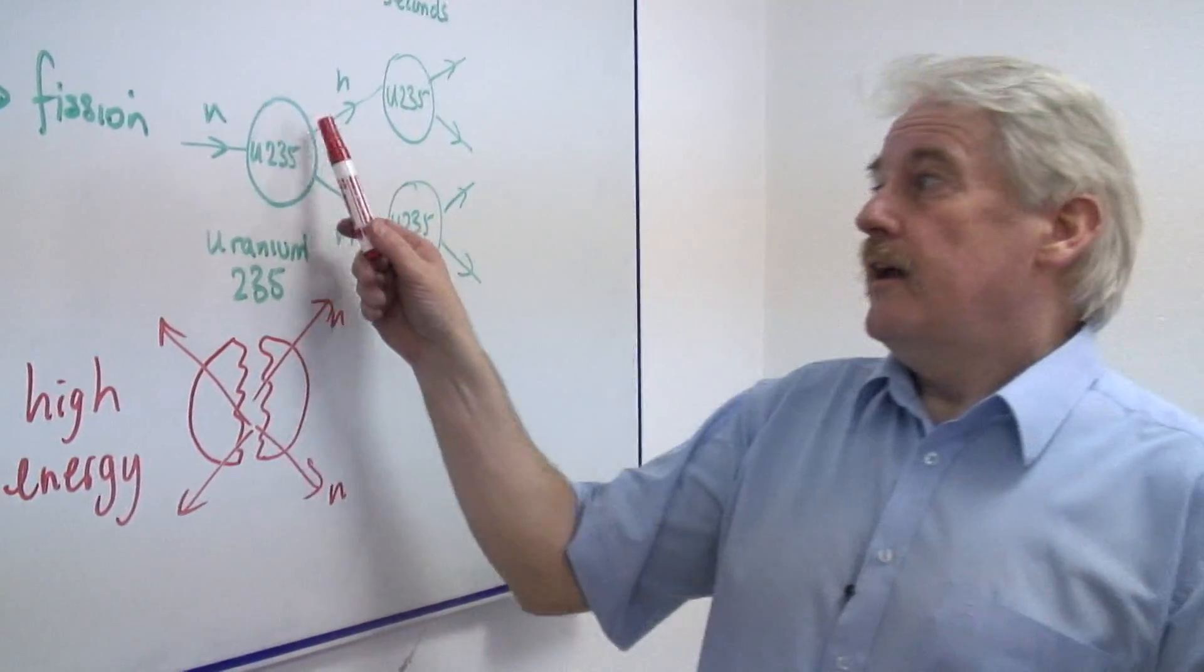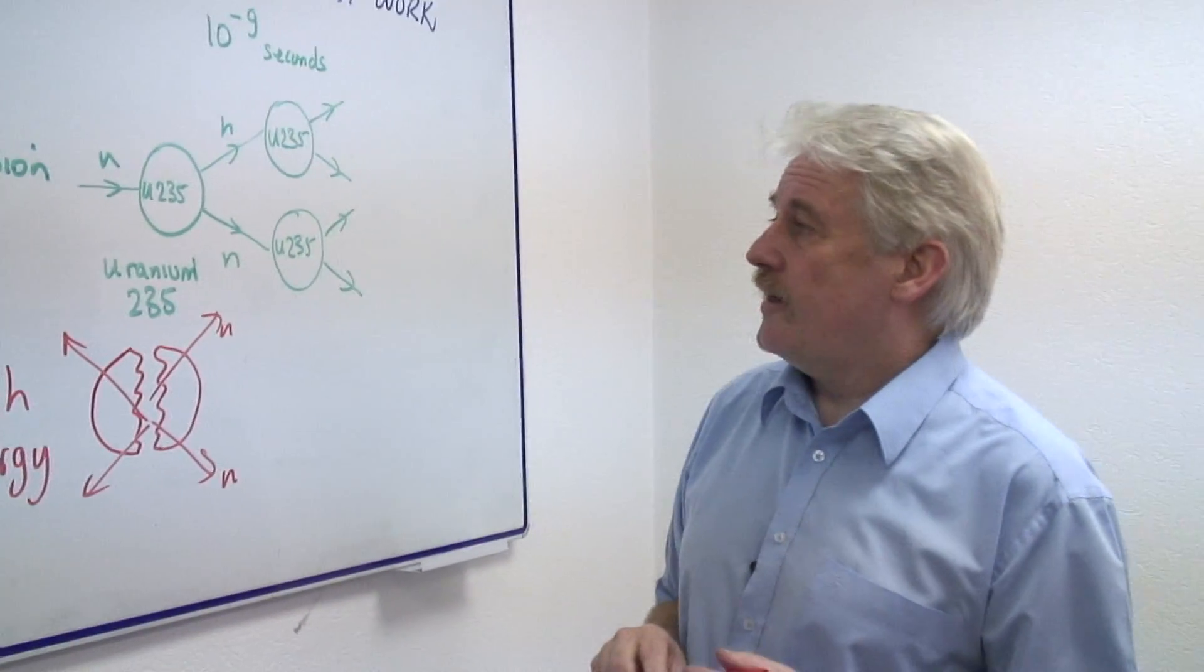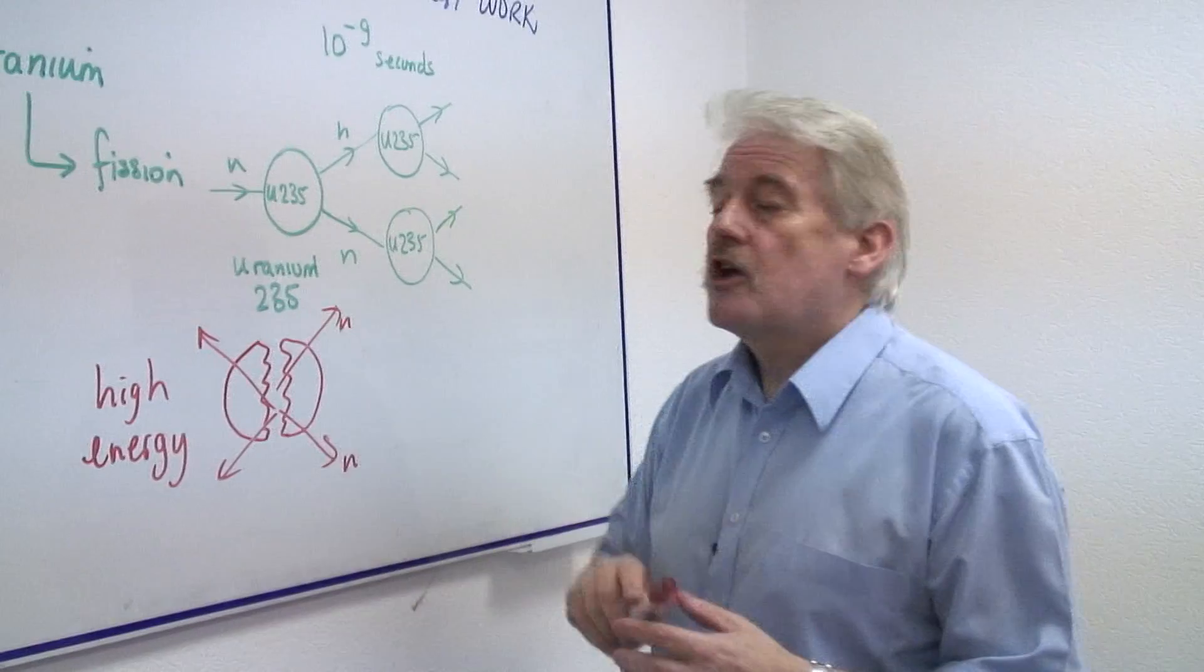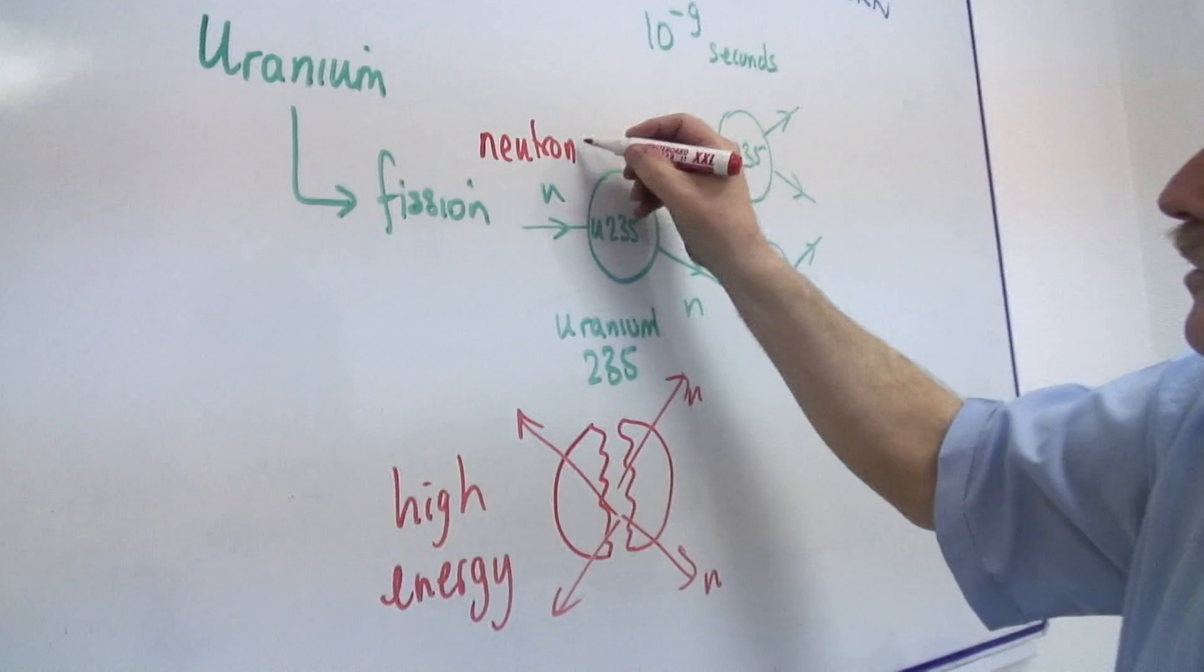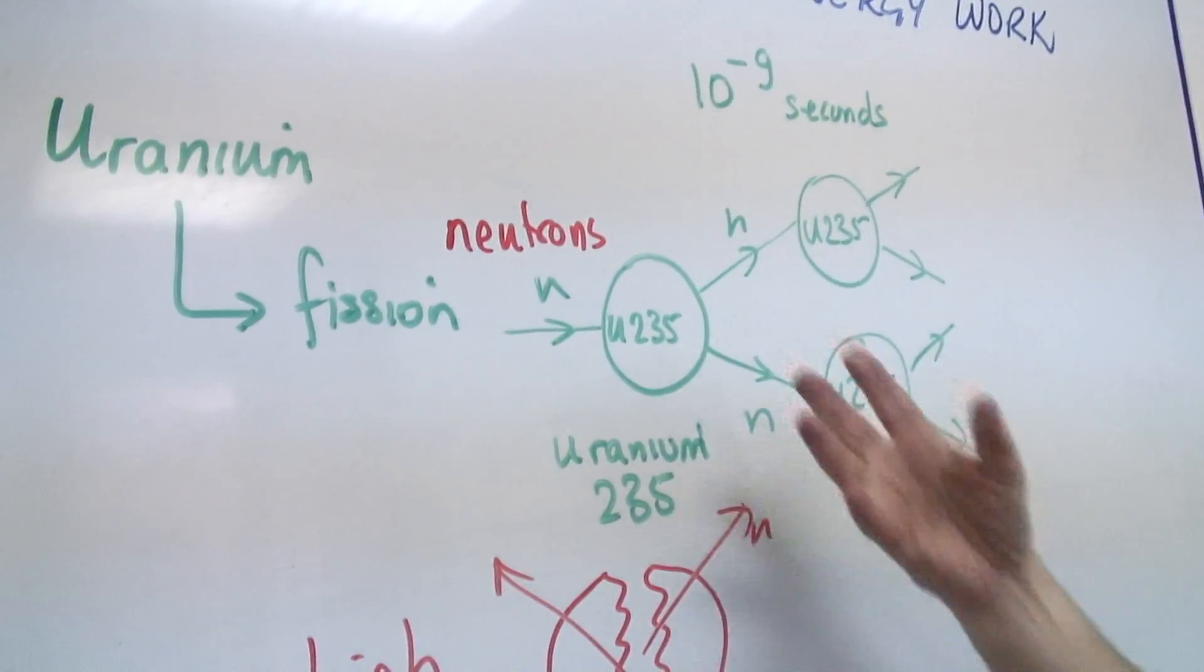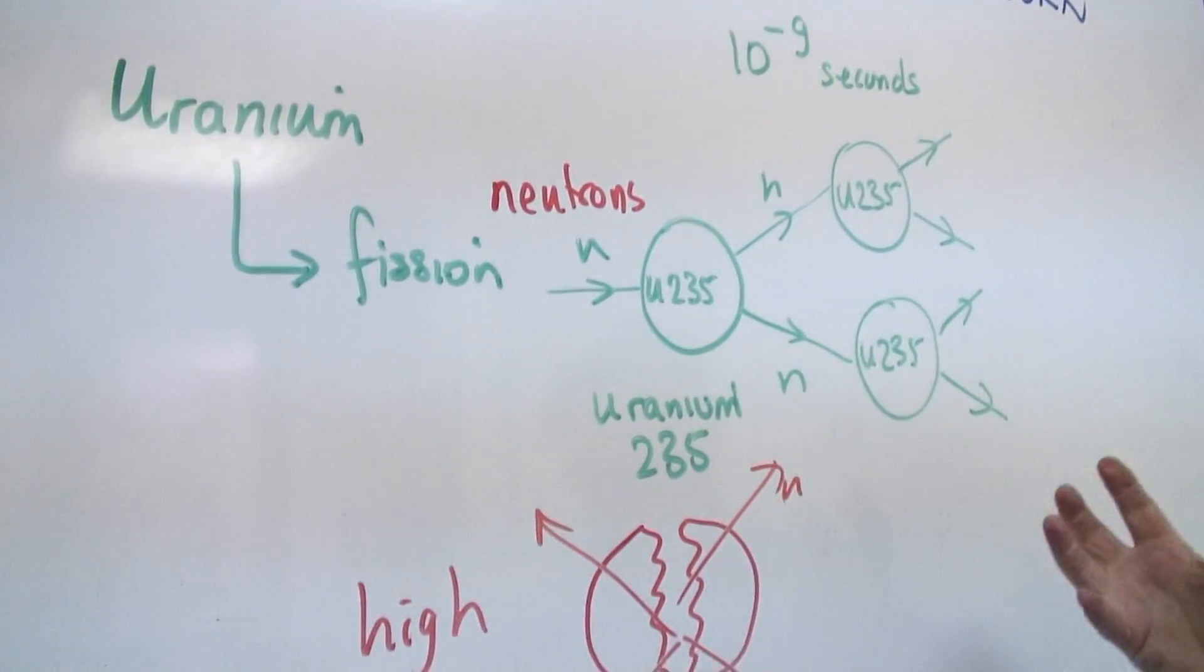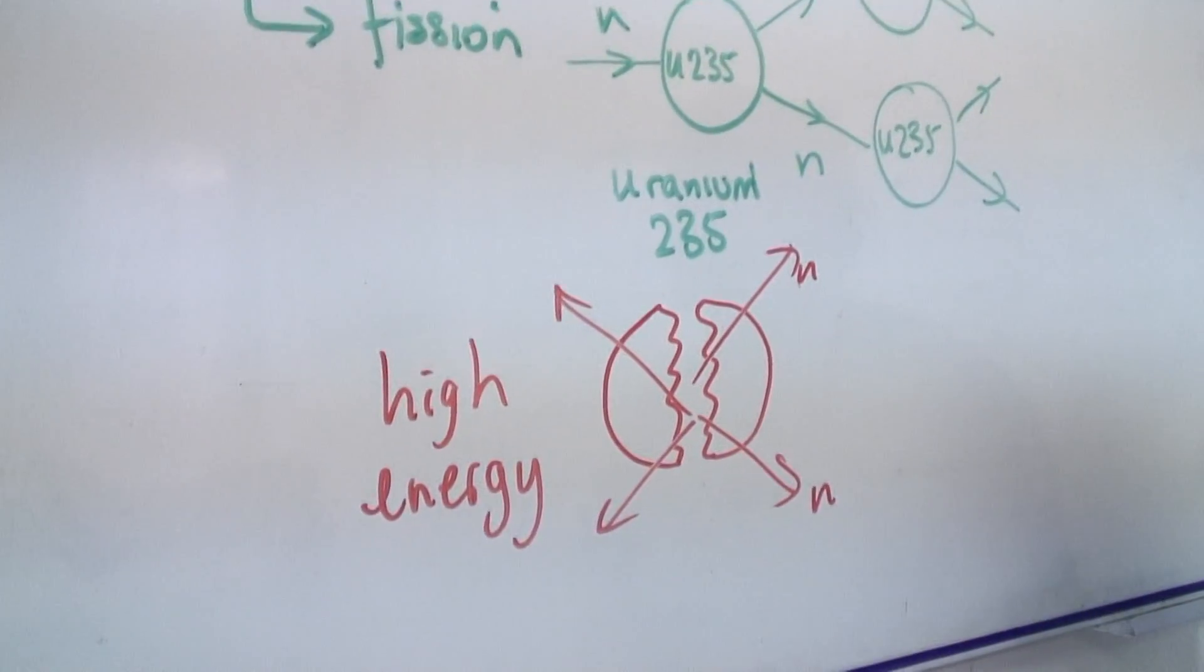So here's my uranium-235 atom. In comes a neutron. This is a neutron. Neutrons are around all the time. And when the uranium-235 splits apart it spits out neutrons as well.